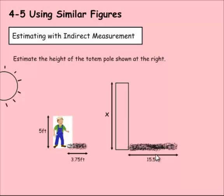So if I'm comparing the big shadow to the small shadow, the big shadow is 15.5 feet. The small shadow is 3.75 feet. Then I need to solve the real actual height of X compared to the smaller height of 5. So X over 5.